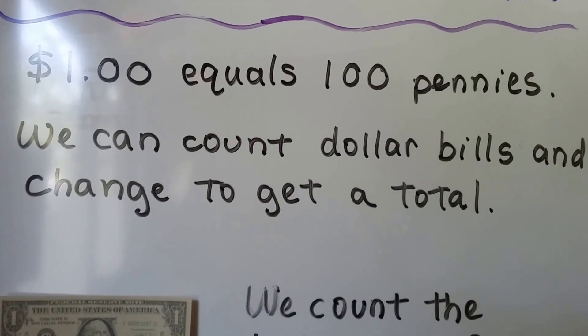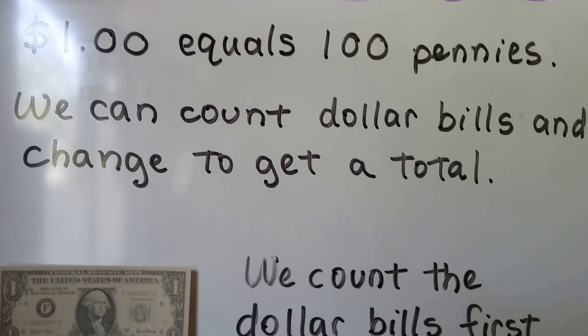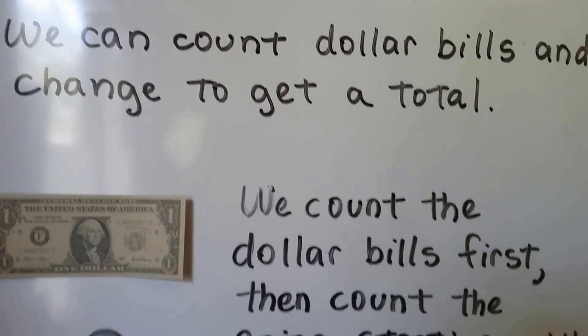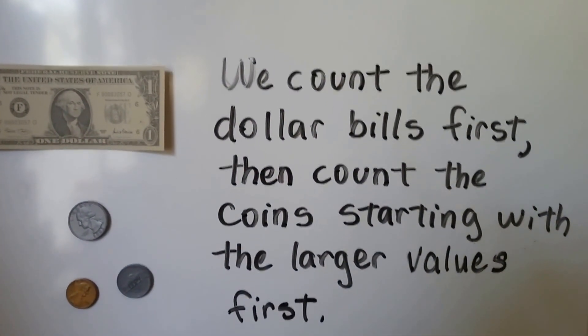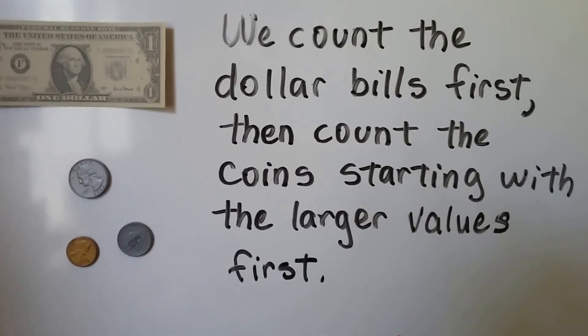Remember, one dollar equals 100 pennies. We can count dollar bills and change to get a total. We count the dollar bills first, then count the coins starting with the larger values first.